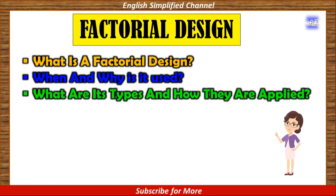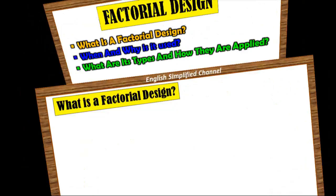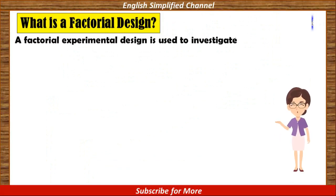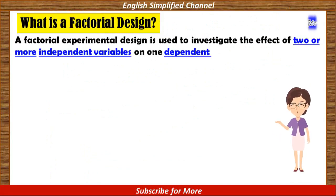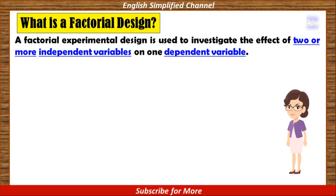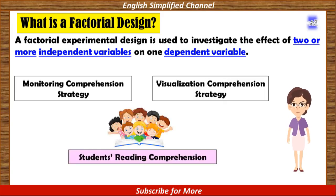Are you ready? Let's get started. A factorial experimental design is used to investigate the effect of two or more independent variables on one dependent variable. Pay attention to those key words: two or more independent variables on one dependent variable.